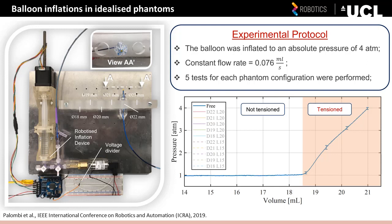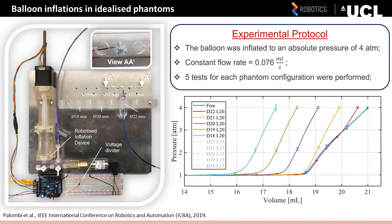Six different diameters from 18 to 23 mm were tested to take into account typical balloon-annulus sizing ratios. Two lengths — 15 and 20 mm — delimiting reported annular length variability in adult human aortic valves were considered. During each test, the balloon was inflated to an absolute pressure of 4 atm, the operating pressure of this catheter according to manufacturer specifications. A clear direct correlation between the position of the departure point from the free inflation curve and the diameter of the phantom can be observed.